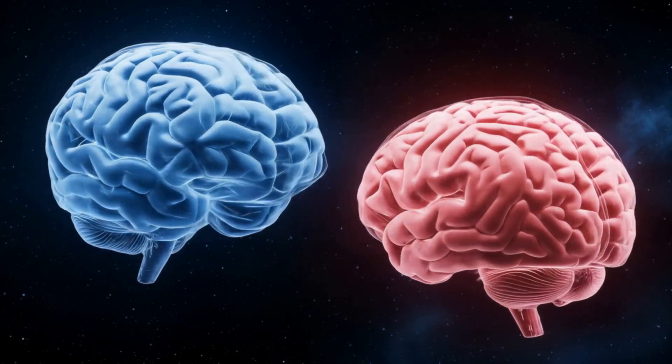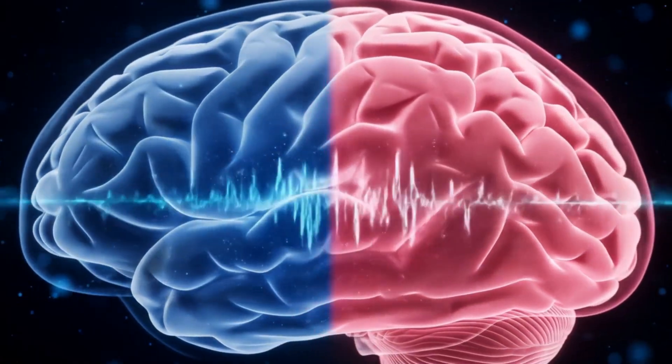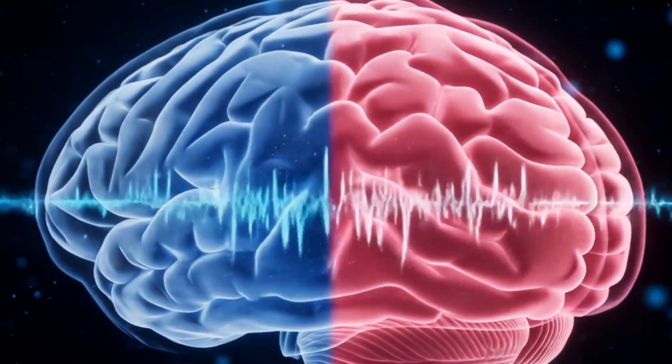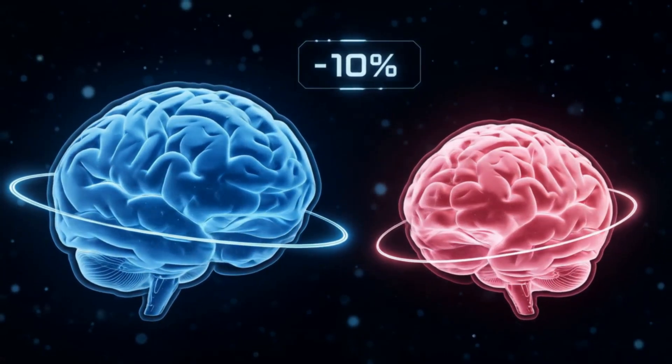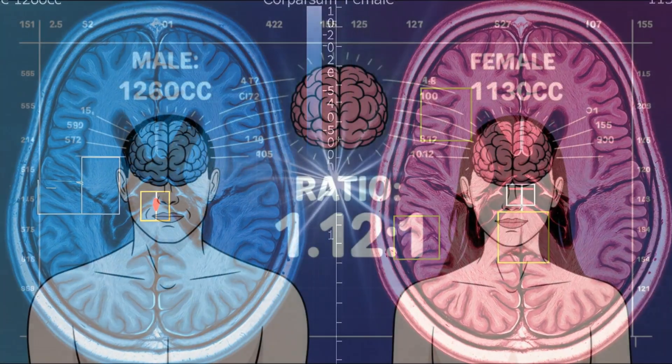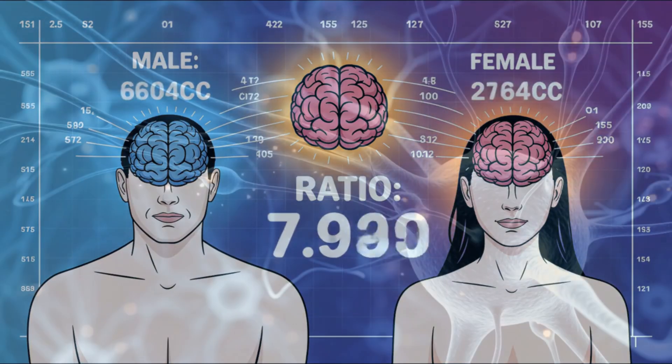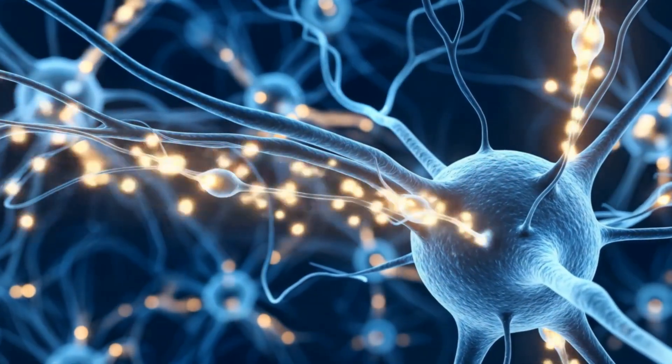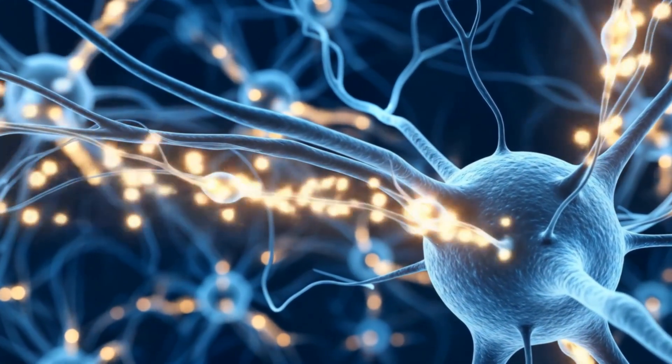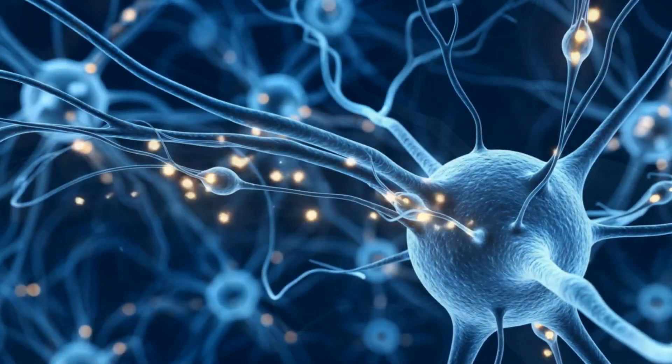Now let's tackle one of the most common claims you might have heard. Male brains are bigger than female brains. And you know what? On average, that's actually true. Male brains tend to be about 10% larger than female brains. But hang on a minute. Before anyone gets too excited, we need to think about this. Is bigger always better when it comes to brains? Well, as it turns out, not really. You see, that size difference pretty much disappears when you account for body size. And more importantly, brain size doesn't equate to intelligence or capability. It's all about how those neurons are connected and how efficiently they work together.